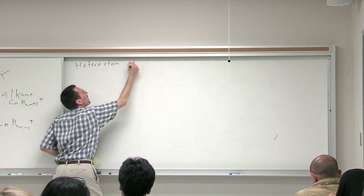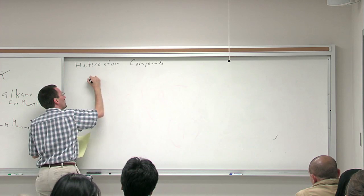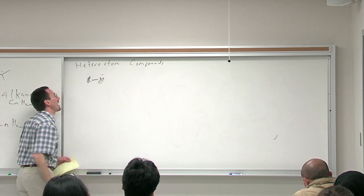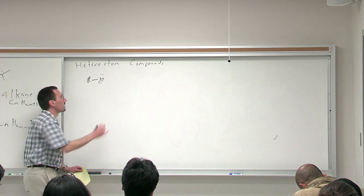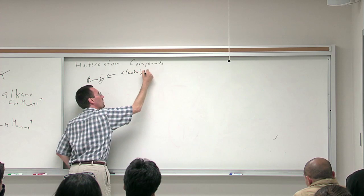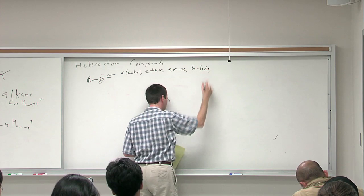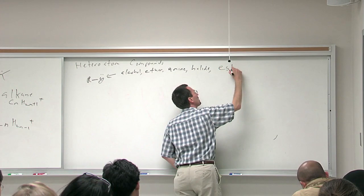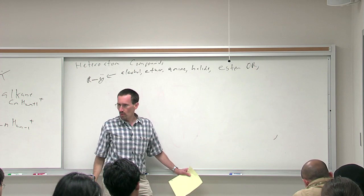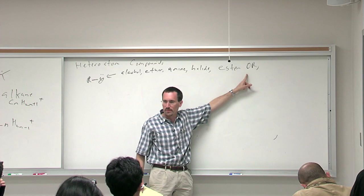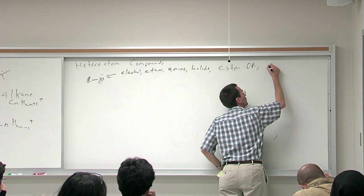So I'll write a generic heteroatom containing compound as RY with showing a lone pair on Y, and I'm going to be generic enough that I mean that this could be an alcohol, an ether, a halide, an amine, but also the OR group of an ester, and so later on in the homework set you'll get esters and we'll see mechanisms involving the carbonyl and also mechanisms involving the OR group. And we'll also say an amide NR2 group.